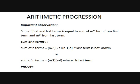Now there is an important observation in arithmetic progression. If you see the general term of the arithmetic progression: first term will be a, second term a plus d, third term a plus 2d, fourth term a plus 3d, and so on, and the nth term is a plus n minus 1 times d.